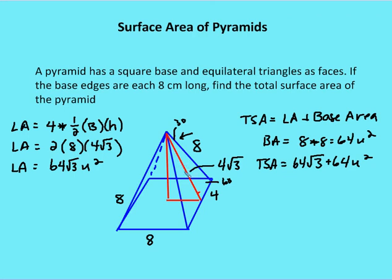We have to recall content from prior chapters — in this case, 30-60-90 triangles — to figure out what the slant height is. The lateral area is 4 times the area of each of these congruent triangles: 4 times one-half base times height, or 2 times 8 times 4√3, which gives me 64√3 units squared. Simply, I need to add the base area to the lateral area to get the total. My base area is 64 units squared. So my total surface area is 64√3 plus 64 units squared.